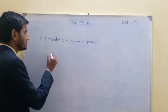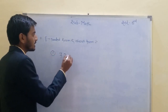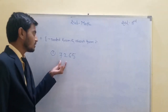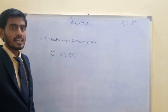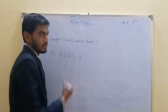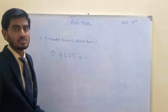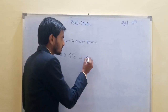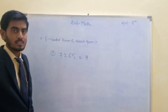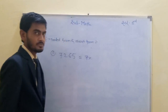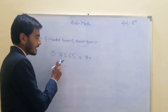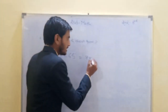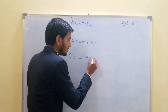Take one example: 7,265. Our first example is 7,265. Simply write the face value and the place of each digit. The first digit is 7. On which place is 7 situated? 1, 10, 100, and 1000. 7 is placed on the 1000's place. Means 7 multiplied by 1000.